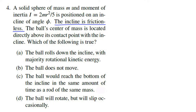There is a net force acting on the sphere along the incline — that mg sin θ component — but no torque on it. So the ball would reach the bottom of the incline in the same amount of time as a rod of the same mass. When you only have translational motion and the surface is frictionless, rotational inertia doesn't matter — all objects reach the bottom in the same time with the same velocity. That's choice C.